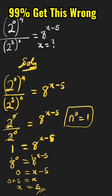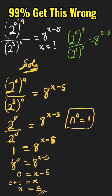Substituting x equals 5 into the original equation: 2 raised to the power of x raised to the power of 4, all over 2 raised to the power of 3x raised to the power of 0, equals 8 raised to the power of 5 minus 5. Multiplying the powers gives 2 raised to the power of 0 over 2 raised to the power of 0, which equals 8 raised to the power of 0. Any number raised to the power of 0 is 1, giving us 1 over 1 equals 1.